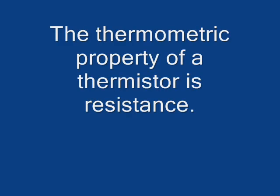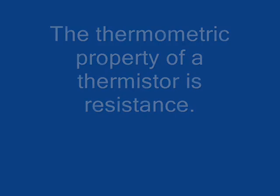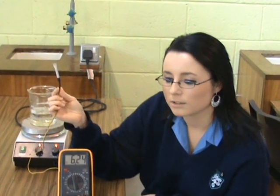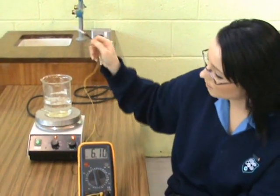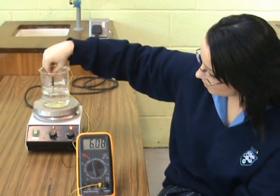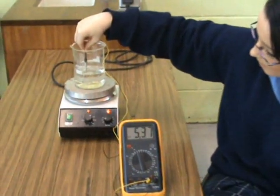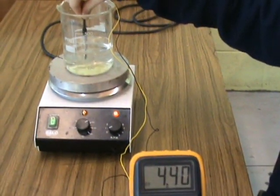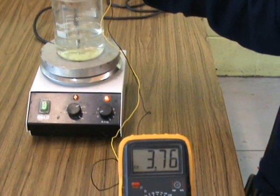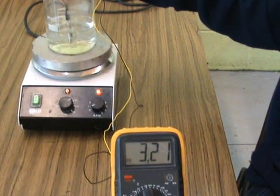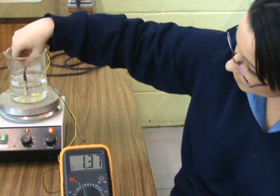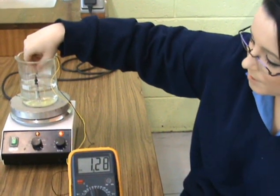Any physical property that changes measurably with temperature is called a thermometric property. A thermistor is a semiconductor, and its thermometric property is resistance. The resistance of a thermistor decreases as the temperature increases.